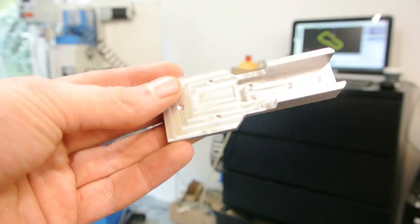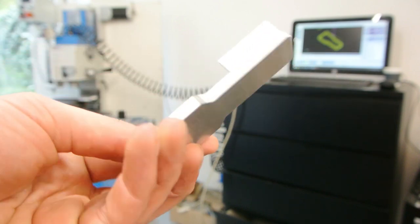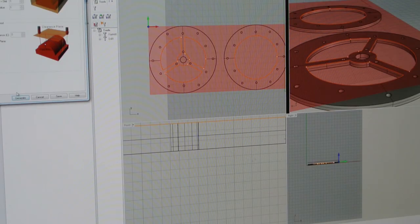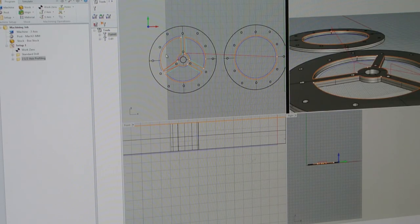This is the finished bracket right out of the mill. Now I'm ready to start on the flywheel. I make my models in Rhino and use Rhino Cam to make my CNC toolpaths.